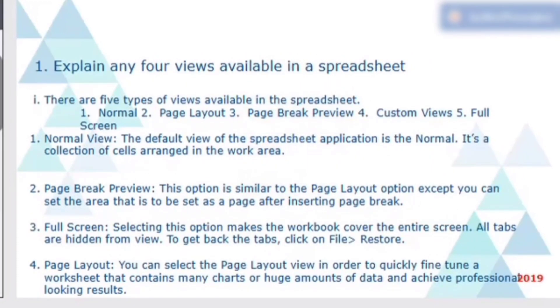Another important question asked in 2019 was, explain any four views available in a spreadsheet. There are five types of views available in a spreadsheet. One is normal, page layout, page break preview and custom views and full screen. Now in a normal view, the default view of a spreadsheet is also known as normal view. It is a collection of a cell arranged in a working area.